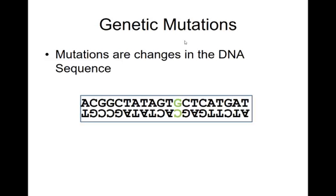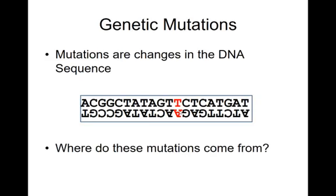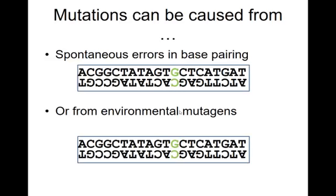This is an opportunity for you to take notes in your big ideas packet. Mutations are changes in the DNA sequence — so the difference between G and C or A and T might be one example. Mutations can be caused by many different things: one is spontaneous errors in base pairing, similar to how sometimes a Xerox copy has a blip. We also get them from environmental mutagens such as UV rays that could potentially cause the DNA sequence to change.